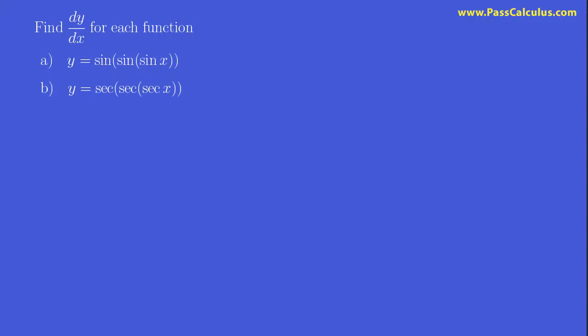For this question we have two functions we need to take the derivative of. The first one has three sines nested together, composed together, and the next one, part b, has three secants nested together.